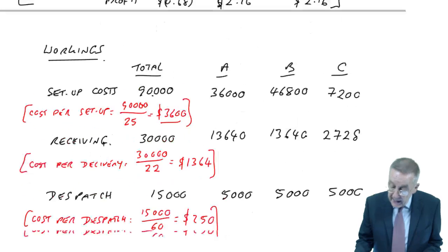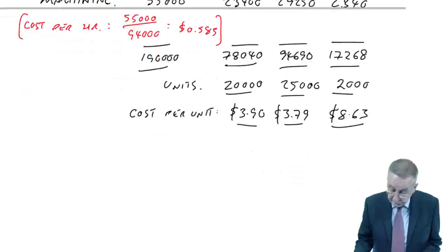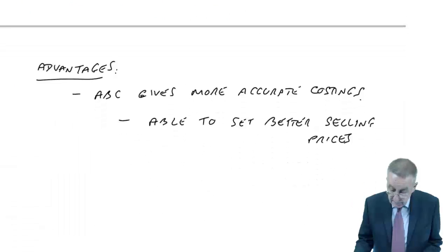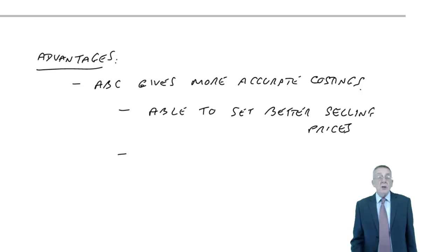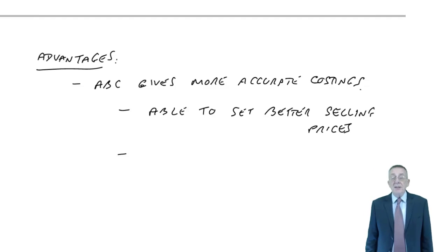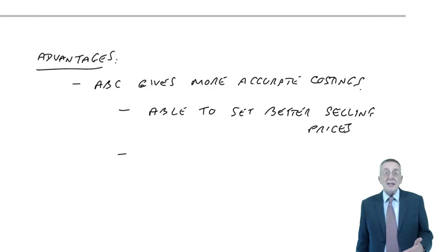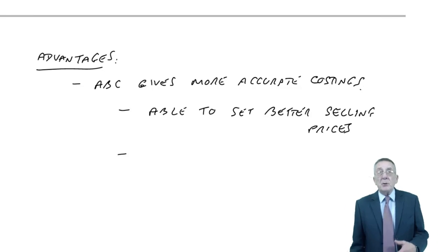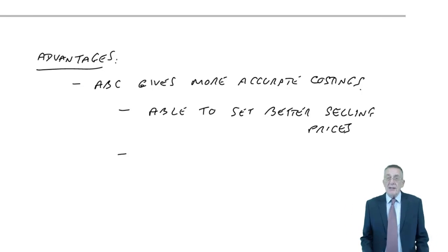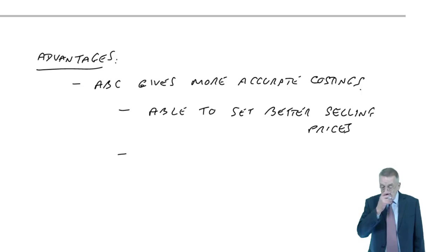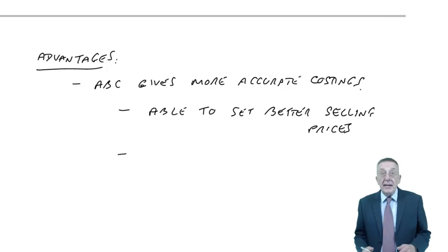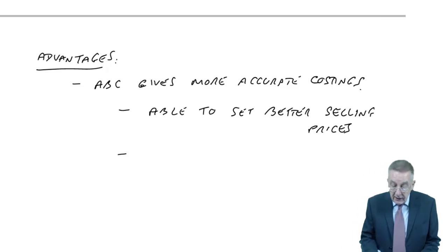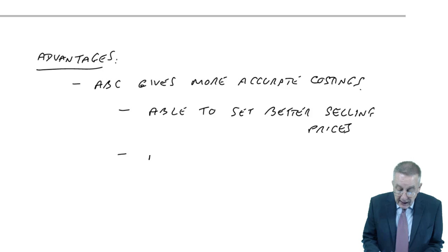Alternatively, the prices may be rather forced — if competitors are selling at $20, then perhaps we can't increase the price. The other reason you need costings is that you're able to make better decisions.